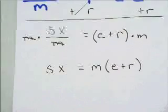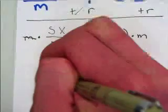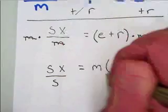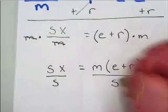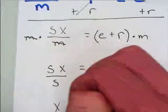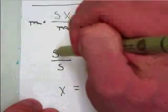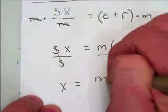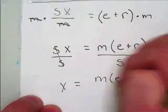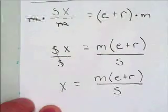Now, finally, my last step to get x by itself, I want to divide both sides of my equation by s. And finally, I'm left with x equals m times e plus r over s.